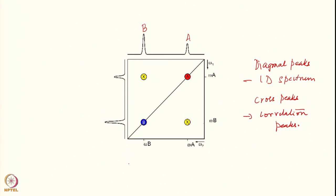What do the cross peaks tell you? They tell you that spins A and B are somehow correlated. What kind of correlation? It can be very different — there can be J coupling correlation or dipolar coupling correlation, or different kinds of correlations. Accordingly, you will have different kinds of spectra. The correlation peaks between A and B and how they arise depends on the pulse sequence — on the way you design the pulse sequence, what pulses you use, what your mixing sequences are.